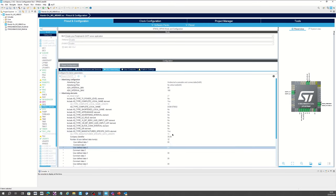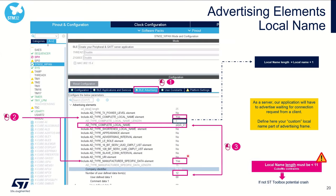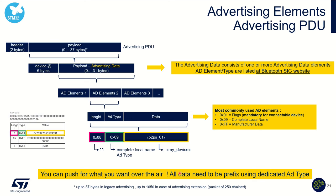Some theory on how an advertising payload is built. Considering legacy advertising, an advertising PDU is up to 37 bytes. Of those 37 bytes, 6 bytes are reserved for the BLE address, meaning you have up to 31 bytes for the advertising data — the payload transmitted over the air.